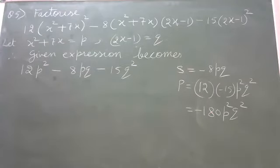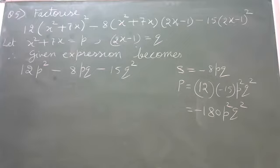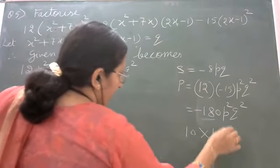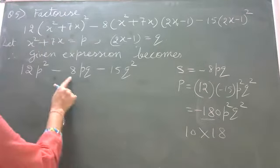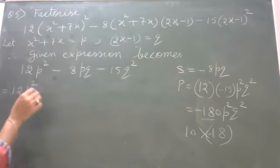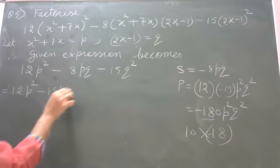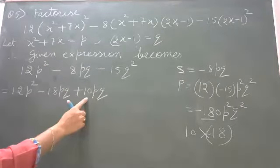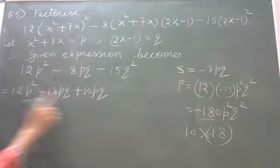For 180, consider the factor pair 10 and 18: their difference is 8, so we use minus 18 and plus 10. This gives 12p square minus 18pq plus 10pq minus 15q square. Check: minus 18 plus 10 equals minus 8pq, and their product is minus 180 p square q square. Correct.